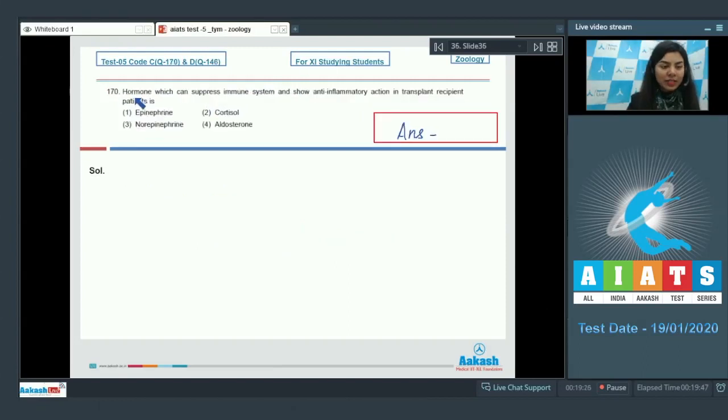Question 170: Hormone which can suppress immune system and show anti-inflammatory action in transplant recipient patients is epinephrine, cortisol, norepinephrine, or aldosterone. We are looking for a hormone which can suppress the immune system and is anti-inflammatory in nature, and this is frequently used in transplant recipient patients.